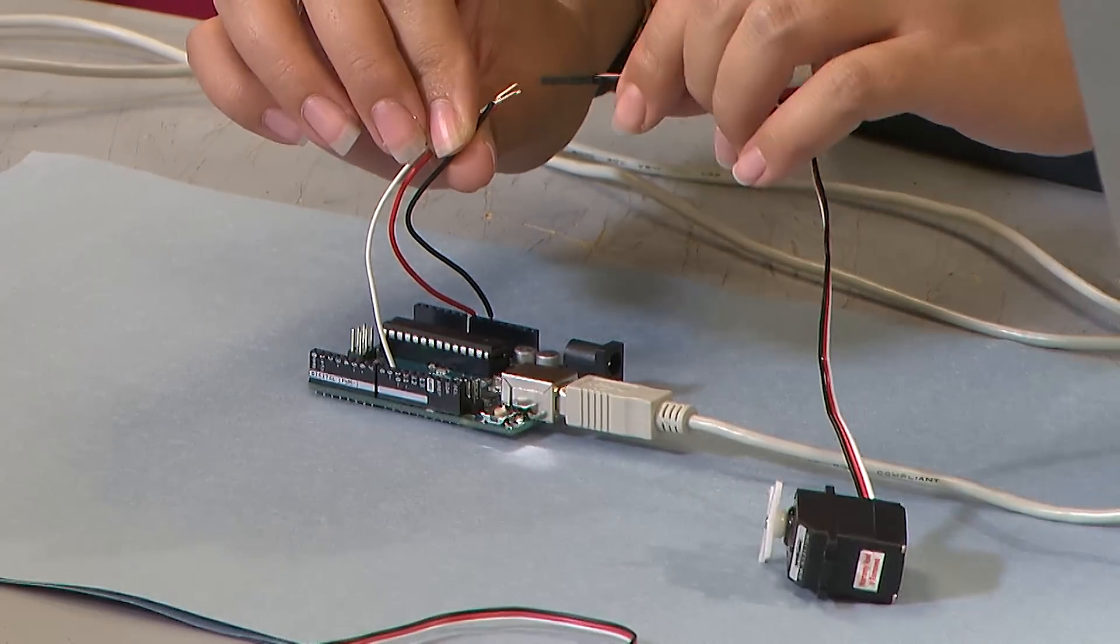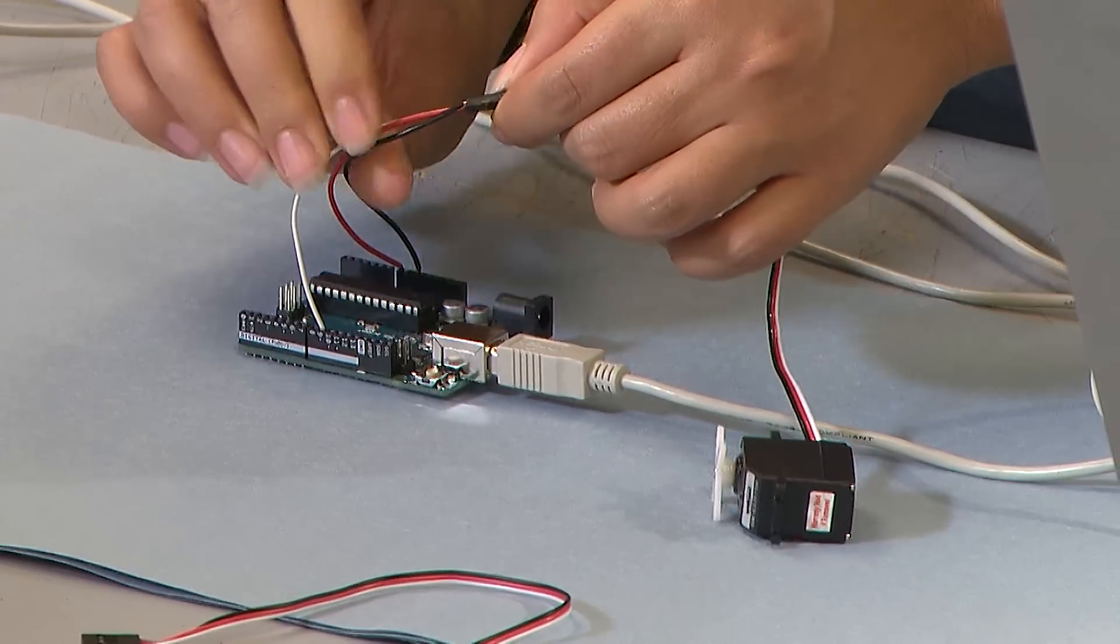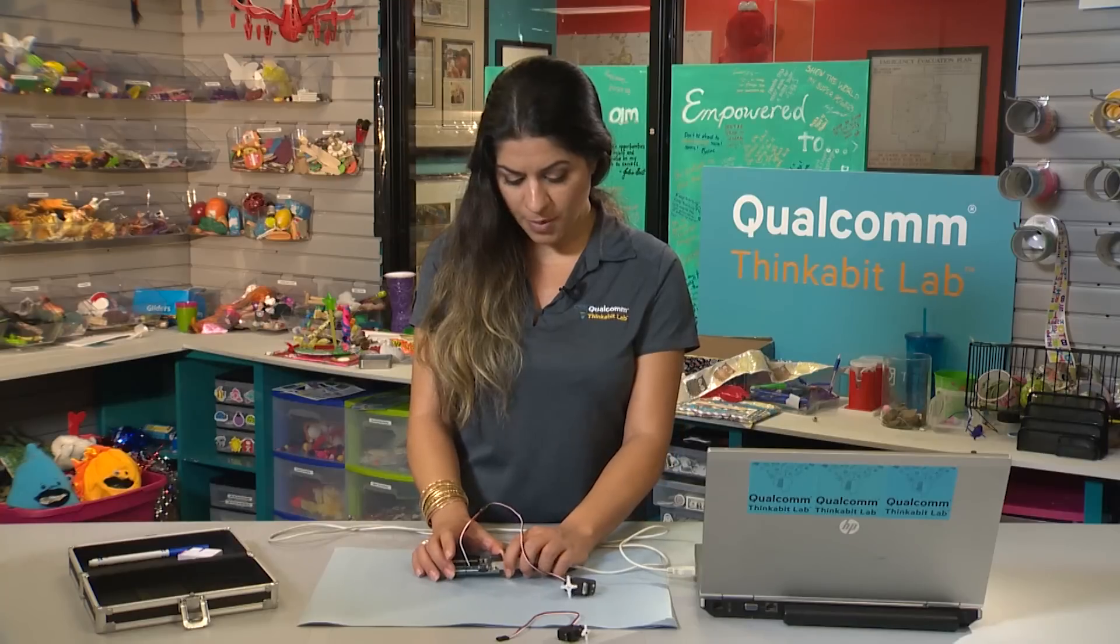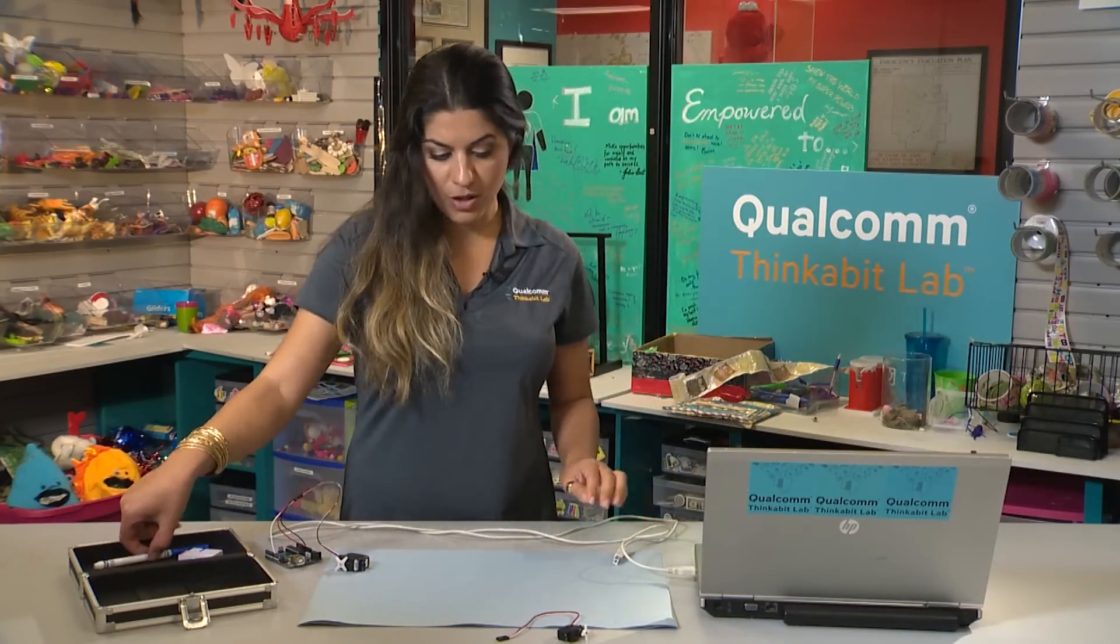Let's go ahead and start changing our code. Let's see what happens if we start manipulating it a little bit. Before I do that, I want to share with you the number line for a big servo. I'm going to unplug this for a moment.